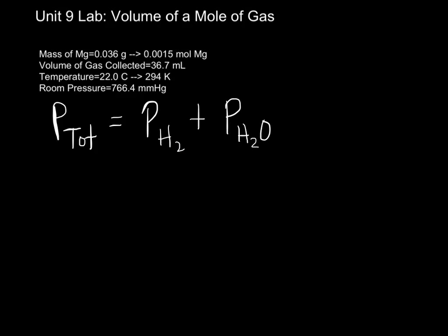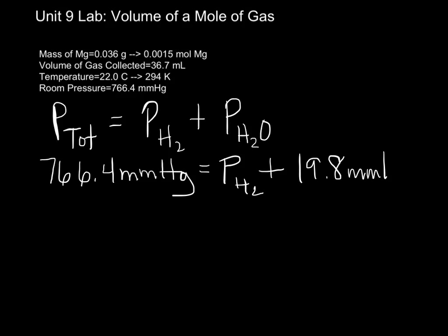On your chart in your lab, you should have been able to determine based on your temperature what the vapor pressure for the water would be. In this case, at 22 degrees Celsius, the vapor pressure of water is 19.8 millimeters of mercury. So, if our total is 766.4 millimeters of mercury, and I know my vapor pressure of my water is 19.8 millimeters of mercury, I can then figure out that the pressure of my hydrogen gas is simply the difference between them.